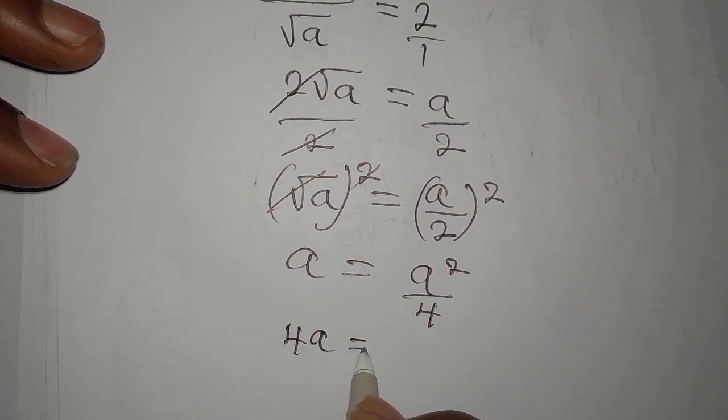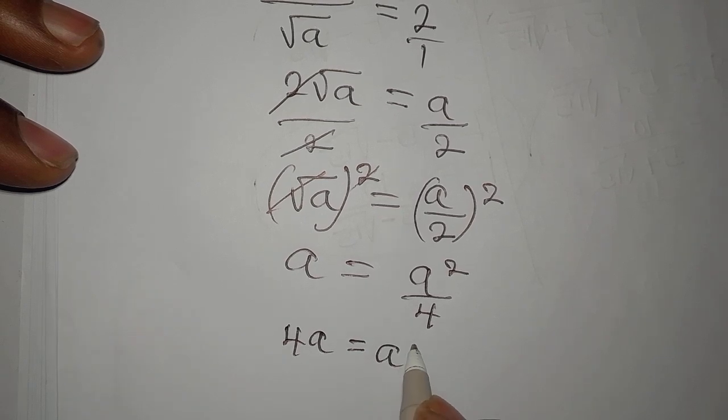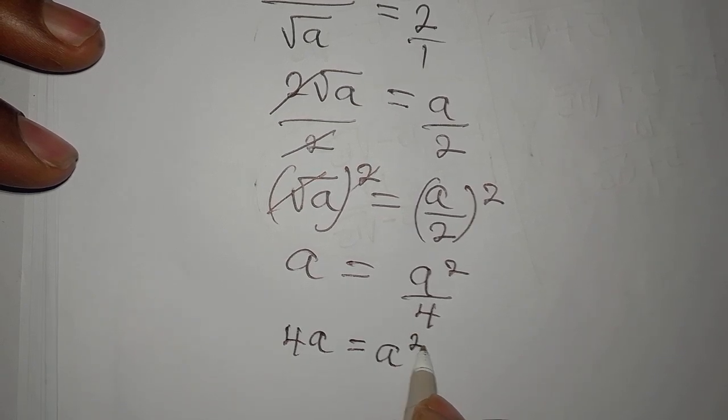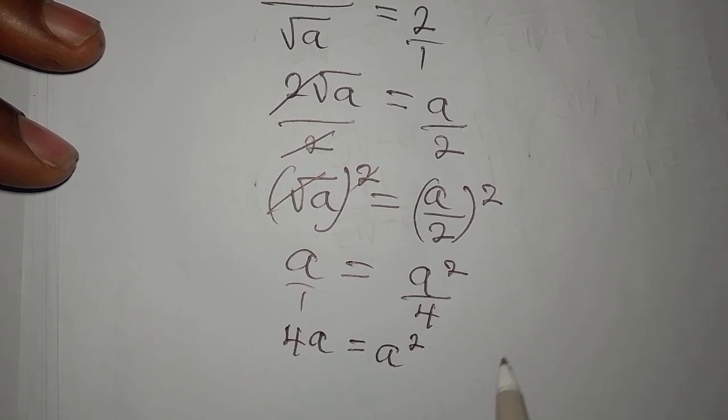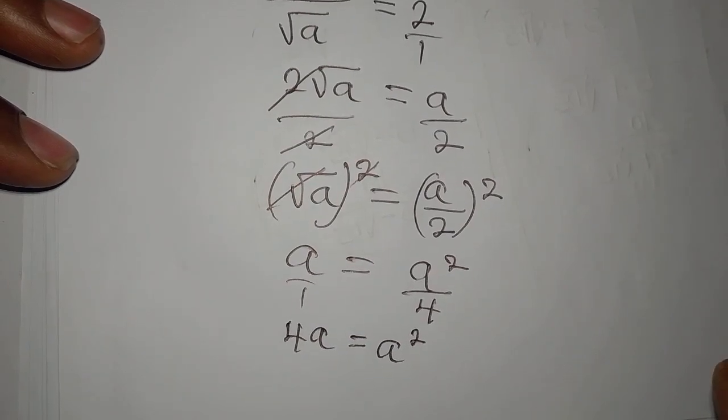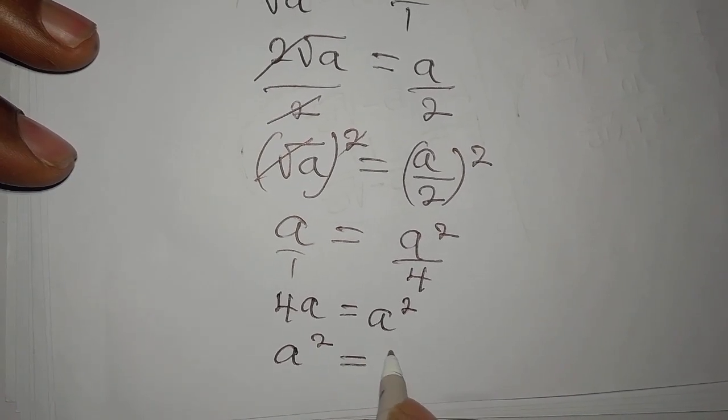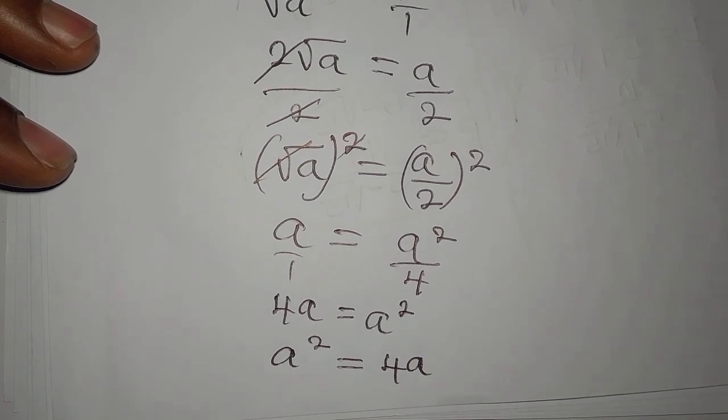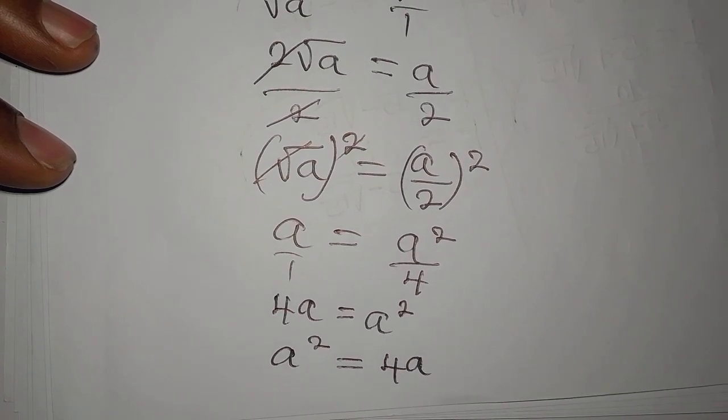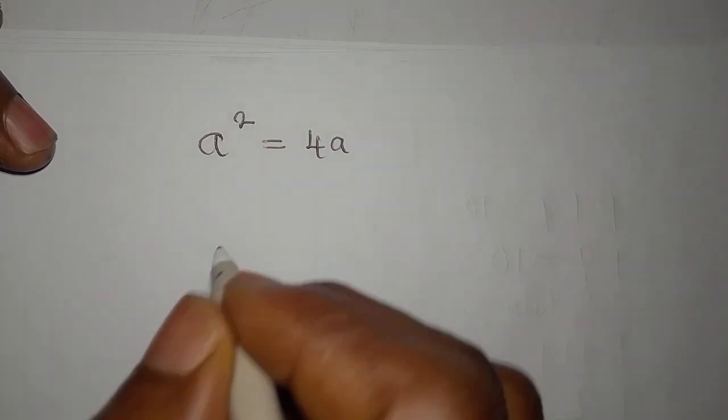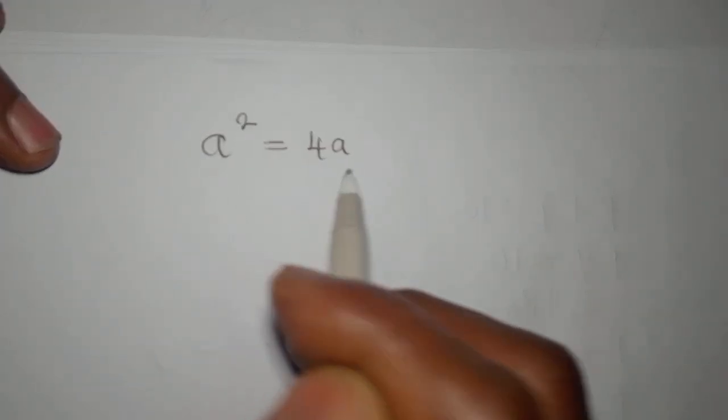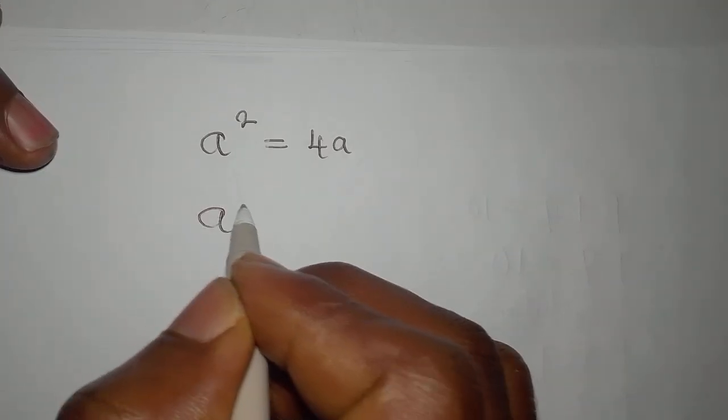4a will be equal to a squared, and this equally means that a squared is equal to 4a. So we're going to continue from here. Okay, so do not divide both sides by a. You rather bring 4a to the left.